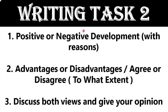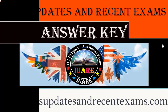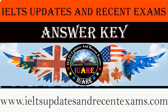So now guys, we are going to talk about our Writing Task 2. Here are three predictions available: the first one is positive or negative development with reasons; the second one is advantages or disadvantages, agree or disagree, or to what extent do you agree or disagree with the given statement; and the third one is discuss both views and give your opinion.